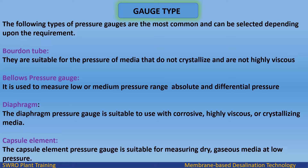Gauge type: The following types of pressure gauges are the most common. Bourdon tube: suitable for media that do not crystallize and are not highly viscous. Bellows pressure gauge: used to measure low or medium pressure range, absolute and differential pressure. Diaphragm: suitable for use with corrosive, highly viscous, or crystallizing media. Capsule element: suitable for measuring dry, gaseous media at low pressure.